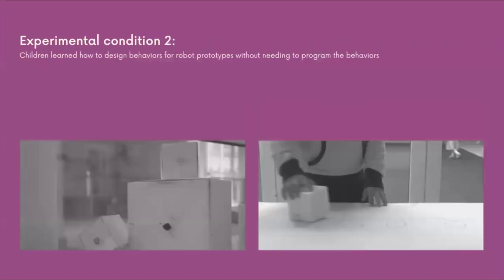Children included in the second experimental condition were instructed to think about different personalities for the robot without needing to program the robot. Children produced movements for the robot using a low fidelity robot prototype in the form of a cube. They worked in small groups of three to four and were responsible for producing the movement for each personality trait of the robot together.